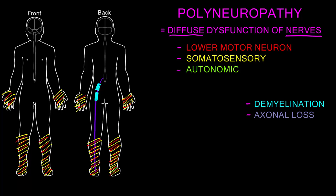We can also see autonomic abnormalities, though these can be a little difficult to appreciate on examination. We often hear about the autonomic abnormalities from patients telling us they're having certain symptoms, such as getting lightheaded when they stand up. One of the things the autonomic nerves do is tell blood vessels to constrict when you're standing so that your blood pressure doesn't fall. If that doesn't happen properly, you don't get enough blood flow to the brain, resulting in lightheadedness — and if that gets bad enough, a person can pass out.